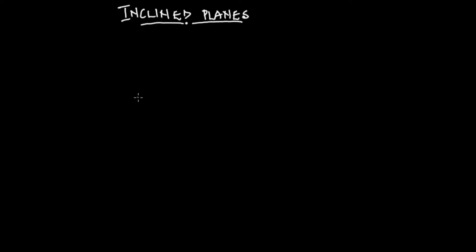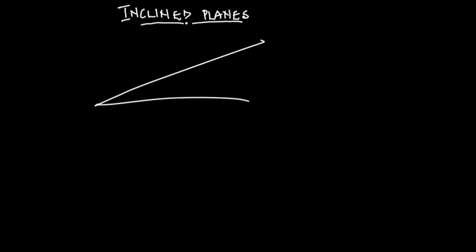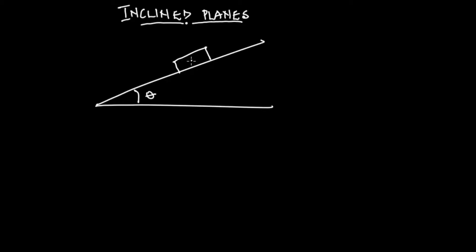Hello and welcome. In this video we are going to be talking about inclined planes, so without wasting much time let's get right into it. If we are given a plane inclined at an angle theta to the horizontal and we have an object on the plane, this object has a weight. The weight of this object will act downwards vertically, and the weight is mass times acceleration due to gravity, which is mg.